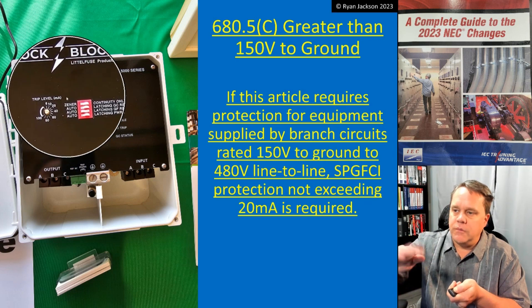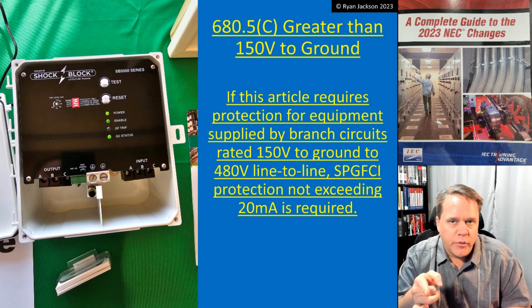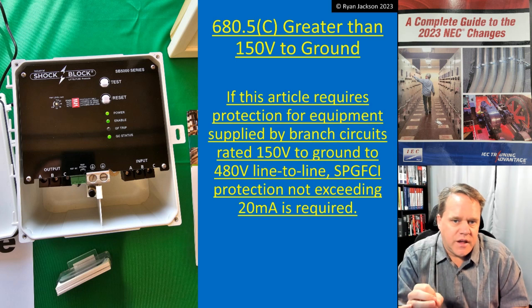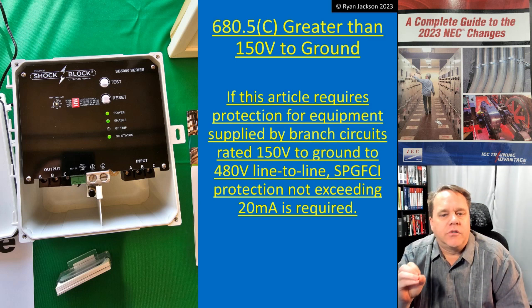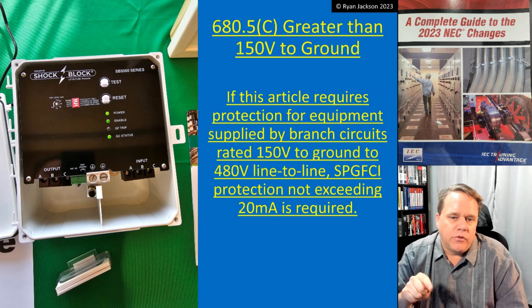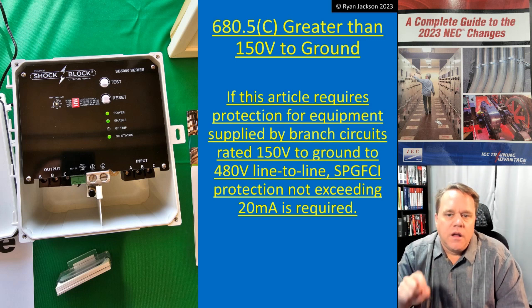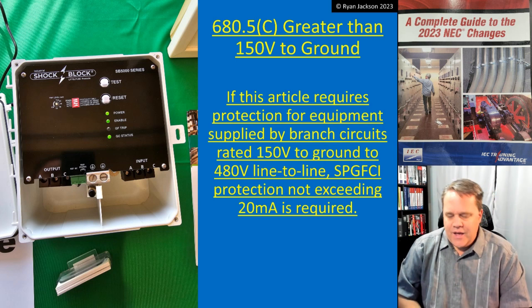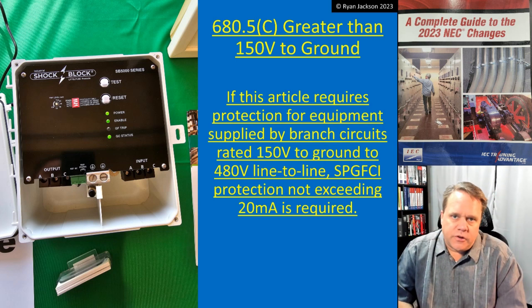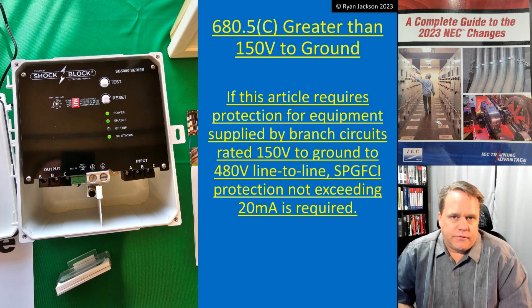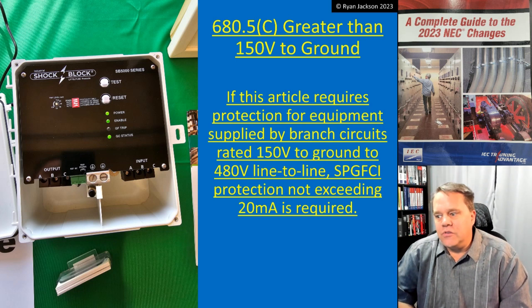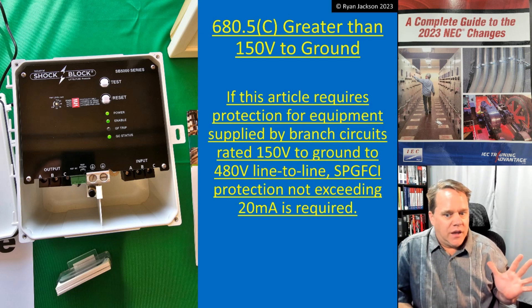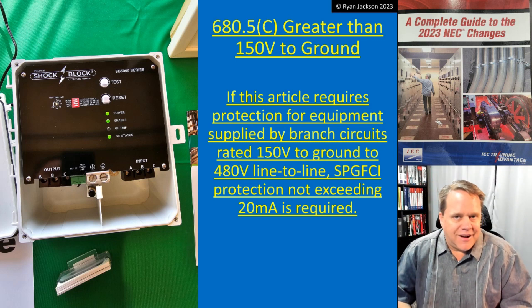If we read what the code says: if Article 680 requires protection for equipment supplied by branch circuits rated 150 volts to ground and 480 volts line to line, then SP GFCI protection not exceeding 20 milliamps is required. So if we're in a swimming pool, most of us would agree we want GFCI protection for the motor. I'm really not interested in swimming in a pool without GFCI protection — a 120-volt swimming pool motor without GFCI is spooky enough; a 480-volt three-phase motor is even more concerning.